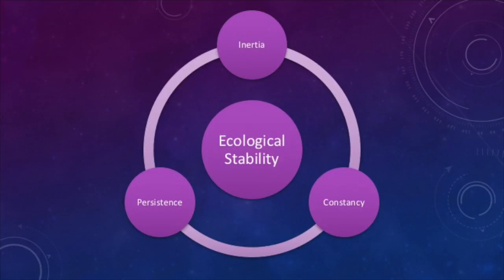Ecological succession occurs in unstable ecosystems. In order for an ecosystem to be considered stable, it must have the following characteristics: inertia, constancy, and persistence. Inertia refers to an ecosystem's ability to resist change. Constancy refers to population sizes — if a population remains slightly below the carrying capacity determined by the abiotic factors in the environment, it is said to be constant. Persistence is the ability of an ecosystem to bounce back from change.